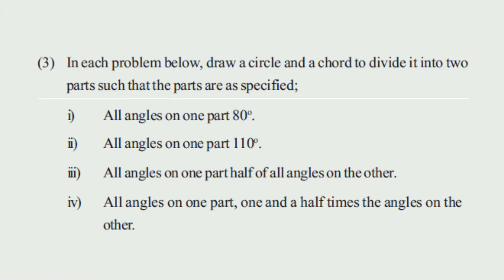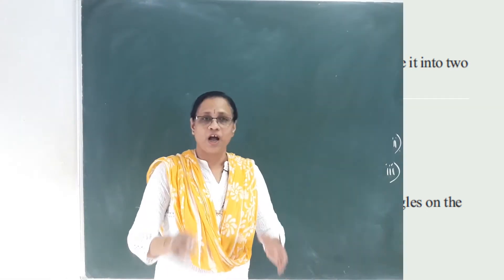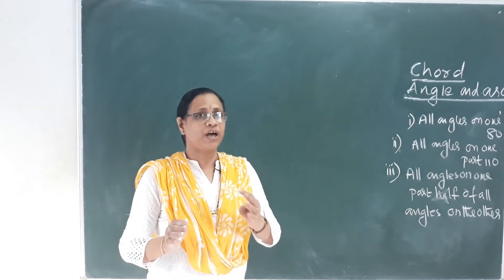Next question: draw a circle and a chord to divide it into two parts such that the inscribed angle on one part is 80 degrees. In the second part, the inscribed angle is 110 degrees. In the third part, one angle is half of the angle on the other part.